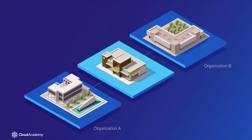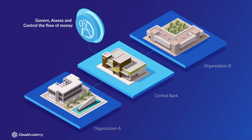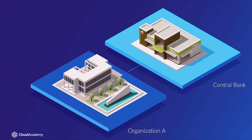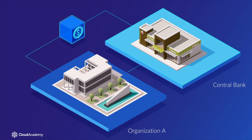In this instance, it would normally be a central bank which would govern, assess and control the flow of money. The bank would ensure that organisation A had enough funds within their selected account before transferring the money to organisation B. And the transaction may include the need for a change of currency depending on the location of organisation B. This type of transaction would likely include a small charge which the bank would deduct from you as the sender for providing the service.